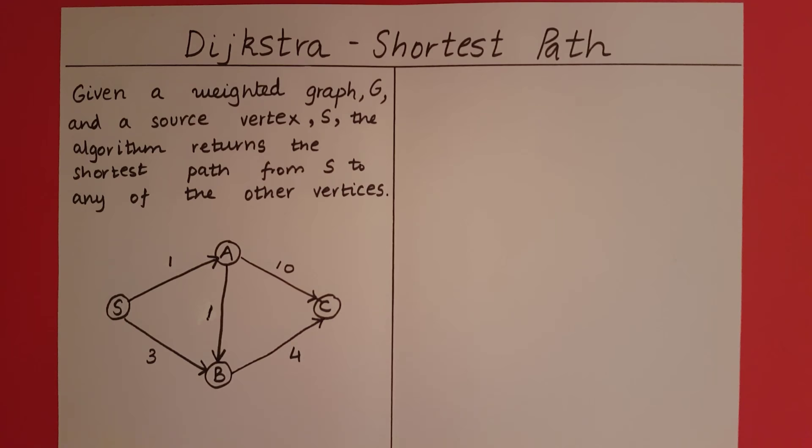So for each of the other vertices apart from the source, we are going to get a path from S to that vertex which is going to have minimum weight. Let's see how Dijkstra's algorithm is going to solve this.